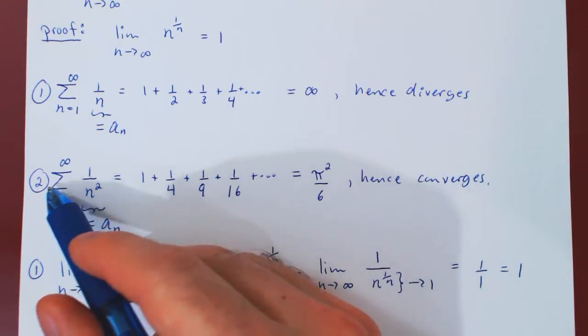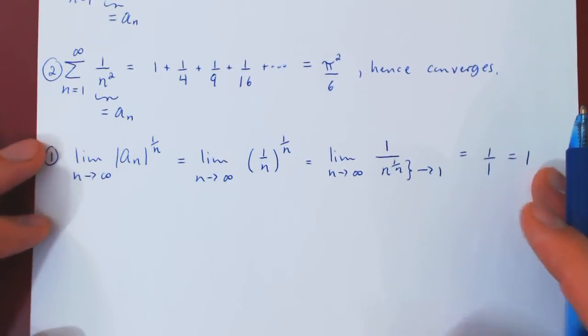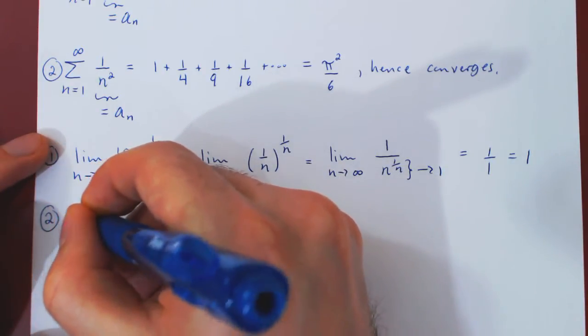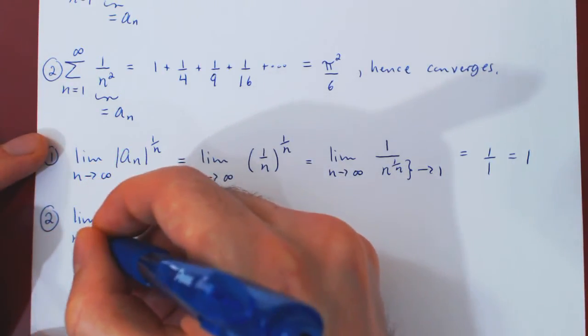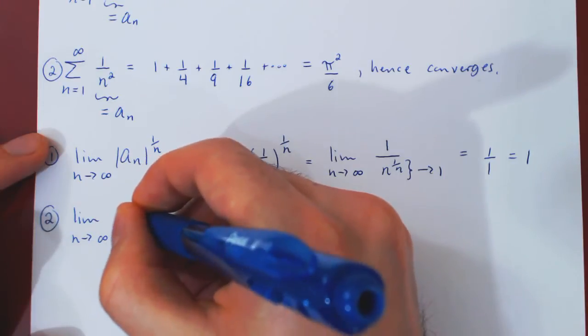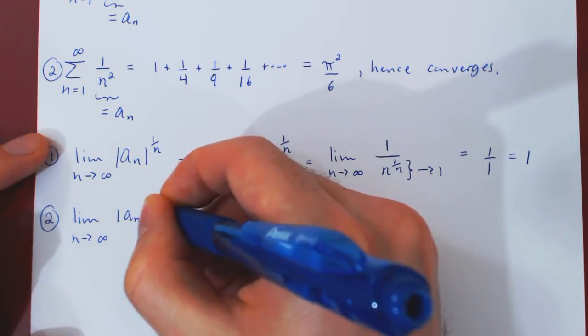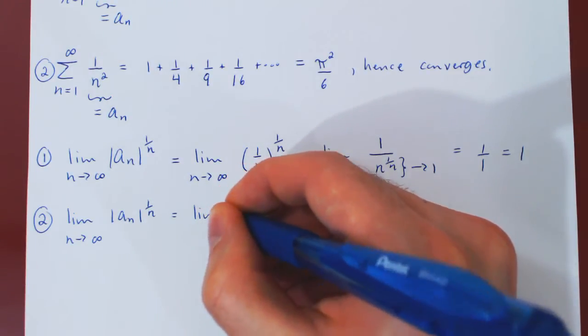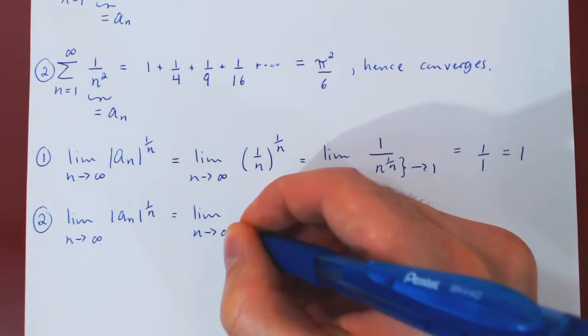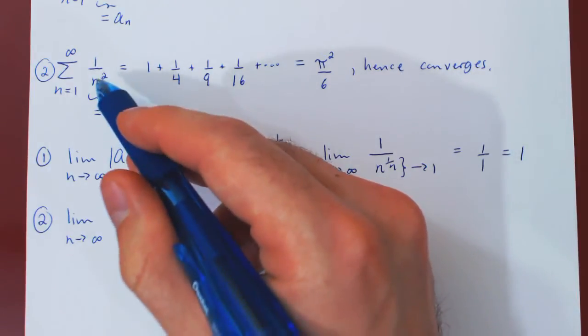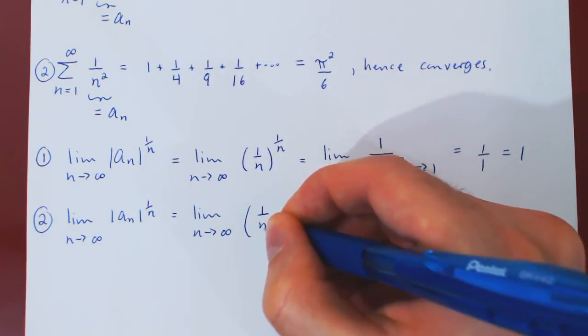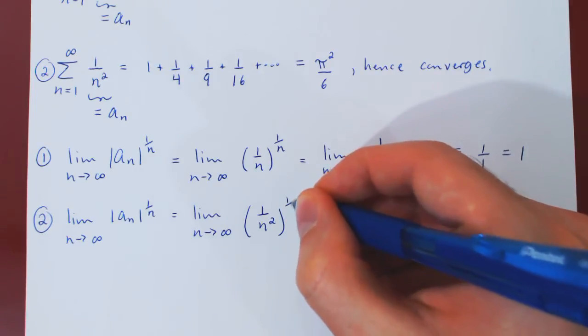Let's consider now our second case. Once again, because a_n here is positive, we can drop the absolute value. a_n is 1 over n squared. And we take the nth root of that.